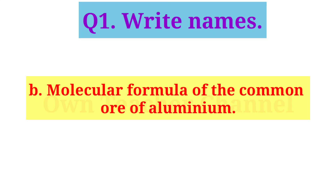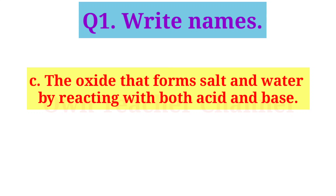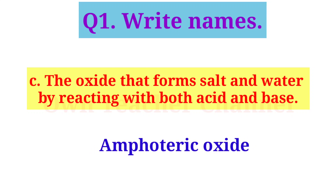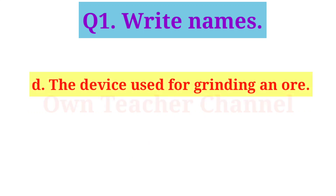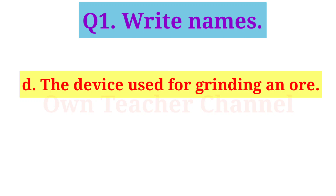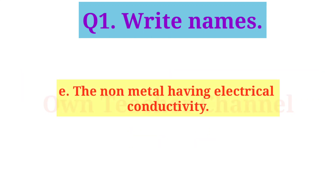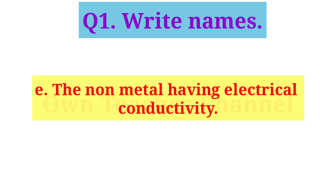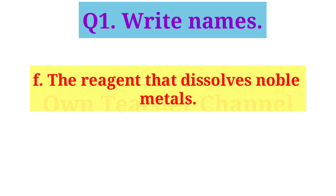Question 1: Write names. The alloy of sodium with mercury is sodium amalgam. The molecular formula of the common ore of aluminium is Al2O3·H2O. The oxide that forms salt and water by reacting with both acid and base is amphoteric oxide. The device used for grinding ore is a ball mill. The non-metal having electrical conductivity is graphite. The reagent that dissolves noble metals is aqua regia.